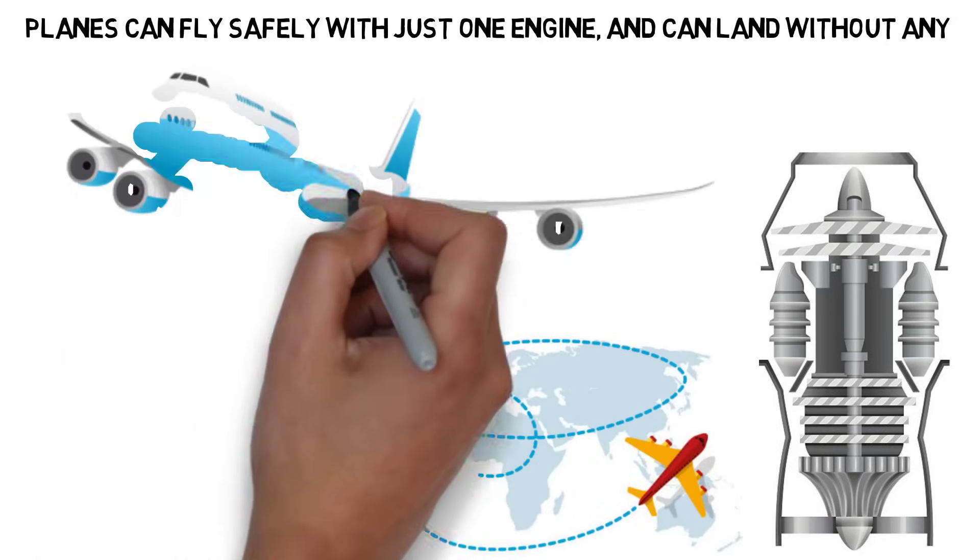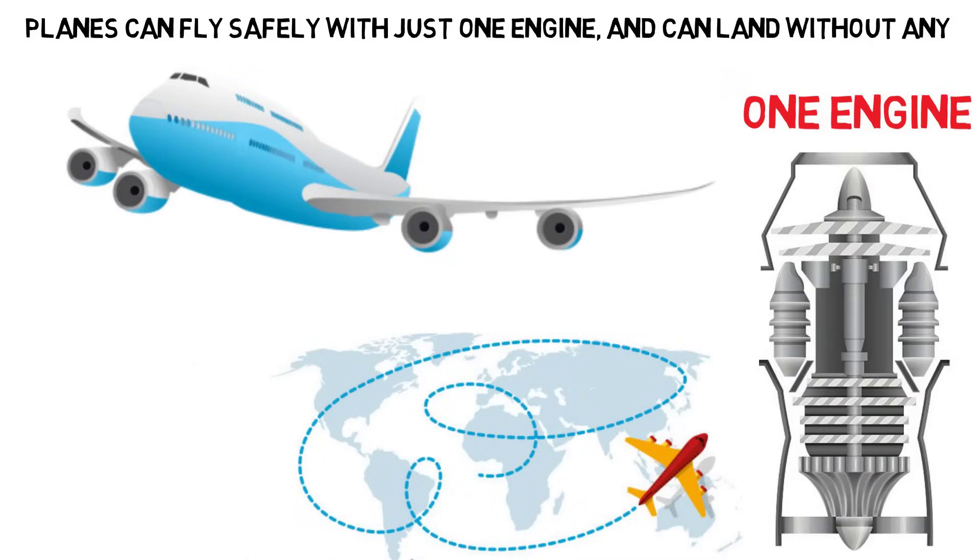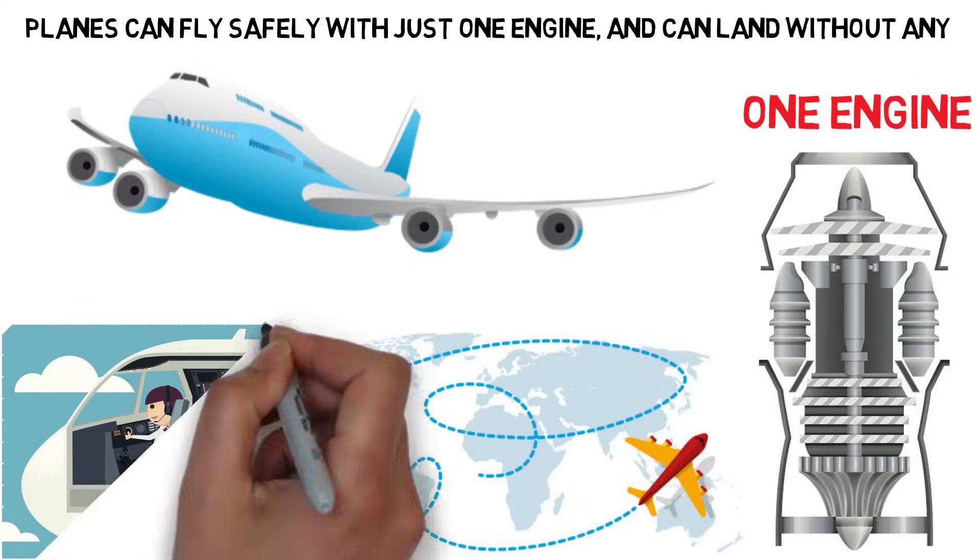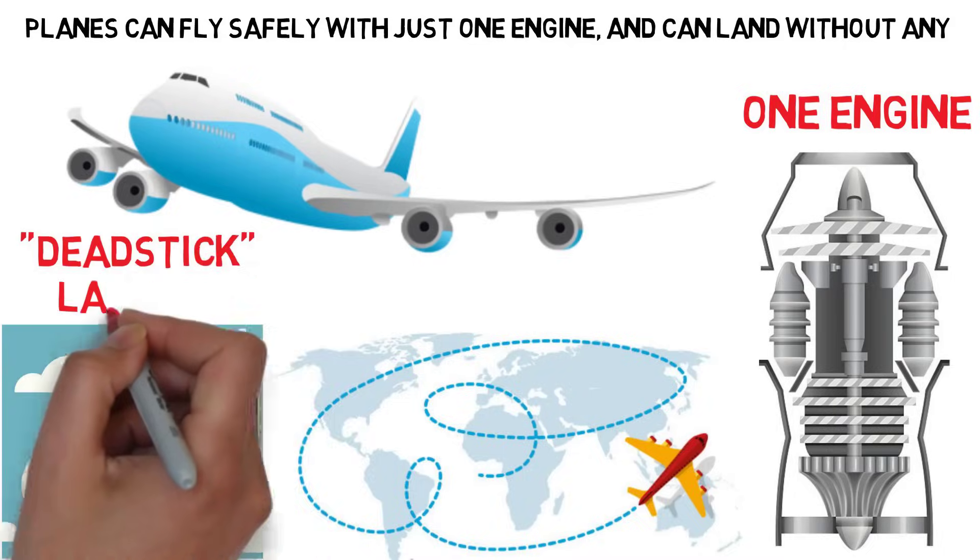All commercial aircraft are designed to operate perfectly well with only one engine. Even if a plane was to lose all the engines, the pilot can still glide the plane and perform a dead-stick landing.